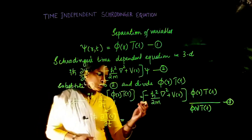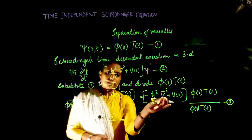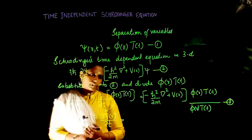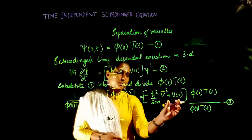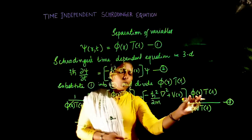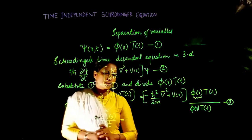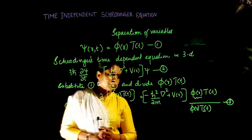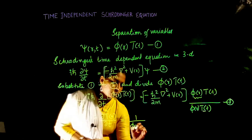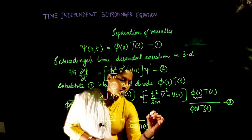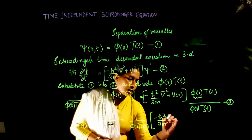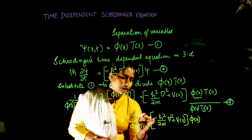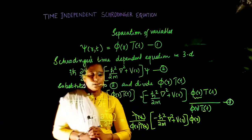On the right-hand side, the Laplacian ∇² is a spatial operator with no time dependence, and the potential V(r) also depends only on position. So when this operator acts on φ(r)·T(t), it acts only on φ(r), and T(t) comes out and cancels with the T(t) in the denominator. The RHS becomes (1/φ(r)) · (−ħ²/2m ∇² + V(r)) · φ(r).